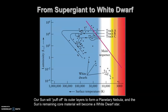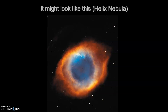Going from supergiant to white dwarf: the Sun will pull off its outer layers — that hydrogen-fusing shell and helium-fusing shell — and that forms the planetary nebula. The remaining core material will become the white dwarf star. On the HR diagram, our track moves up and then down into white dwarf territory. The outer layers form the planetary nebula, and the core of the Sun forms the white dwarf.